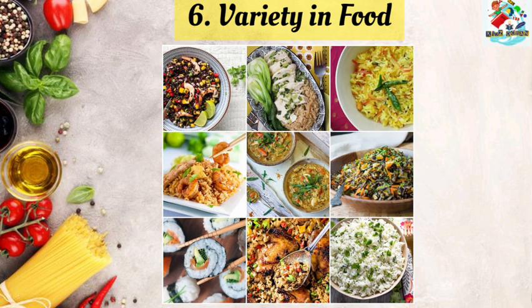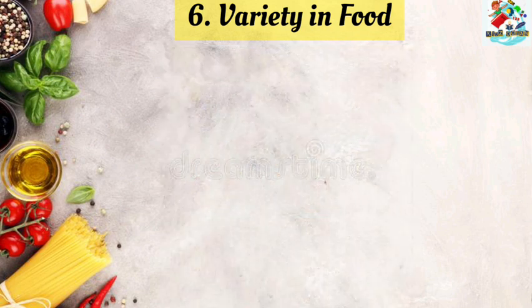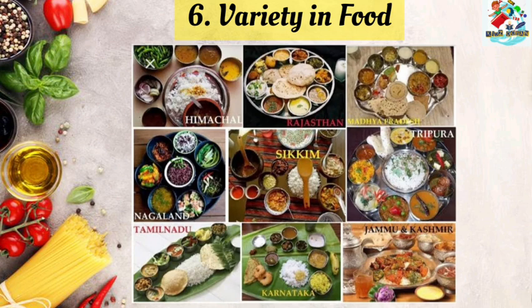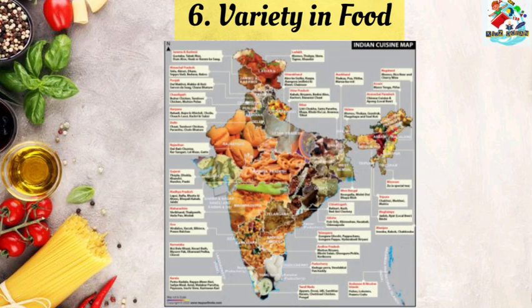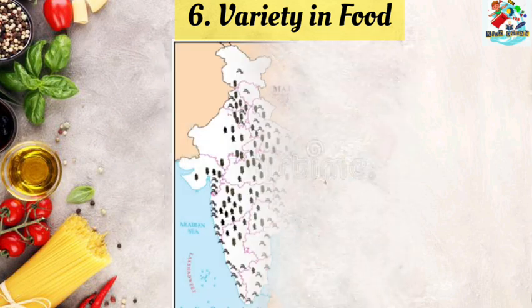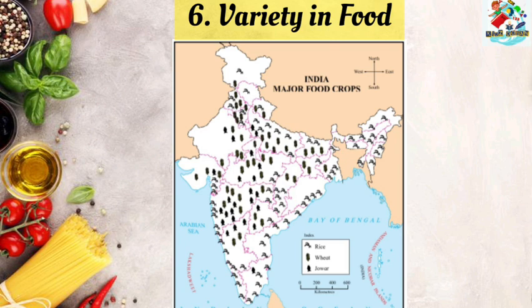Now we know that various dishes can be made from the same ingredients. Even when there is a variety in the dishes, the basic ingredient remains the same. Remember, children, there is diversity in the food items of the different states of our country, as you can see in the picture. In every region there is one staple food. Why does the staple food of people vary from region to region? Study the map given below and observe the distribution of food crops in the country.